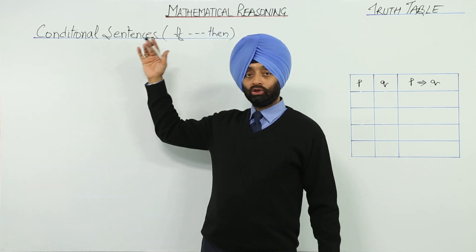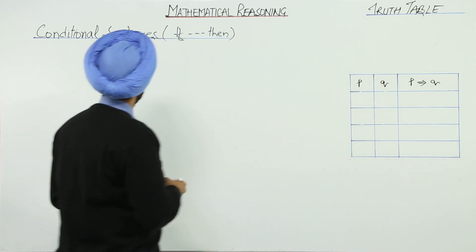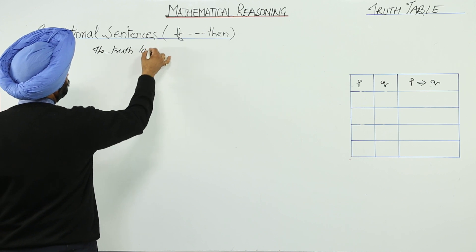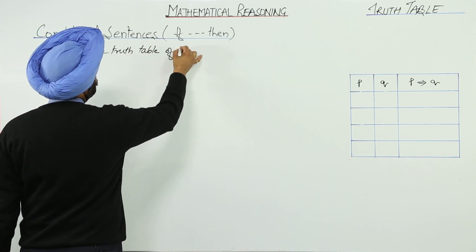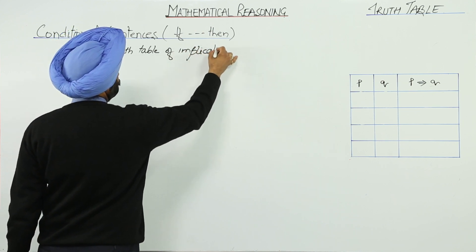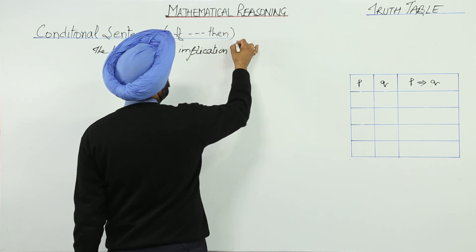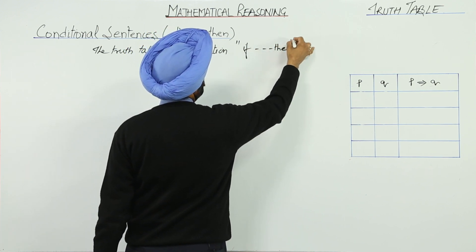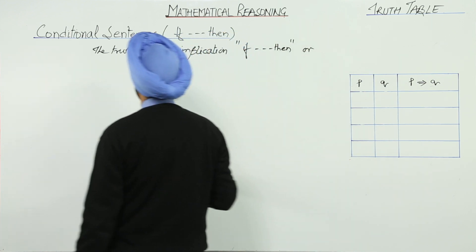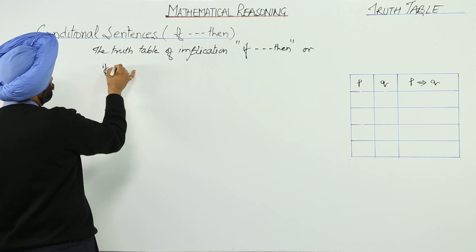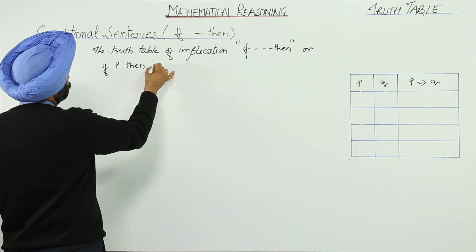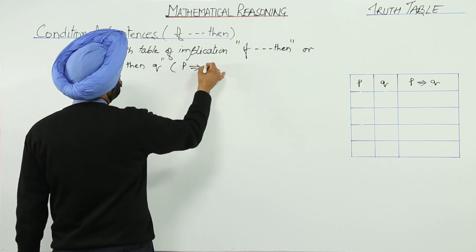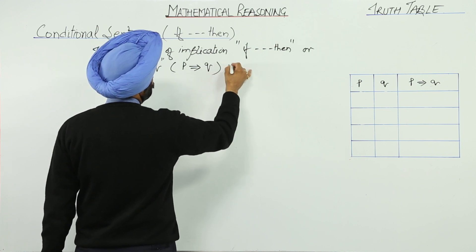So let us go first with the truth table for conditional. The truth table of implication — 'if P, then Q' — we can write it like this: if P, then Q. And we are writing for this: P implies Q is a conditional.